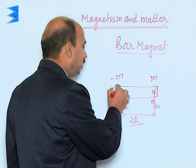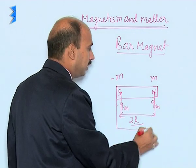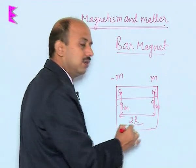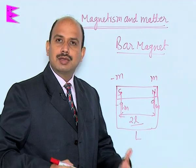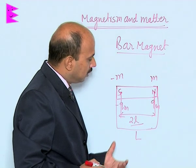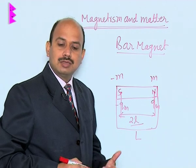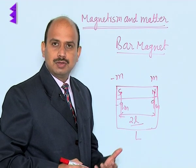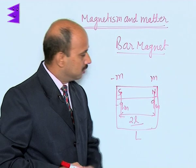The whole length of this magnet is known as the geometrical length of the magnet. The geometrical length of the magnet is larger than the magnetic length of the magnet.